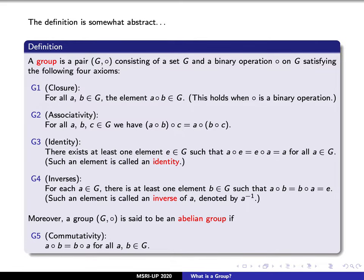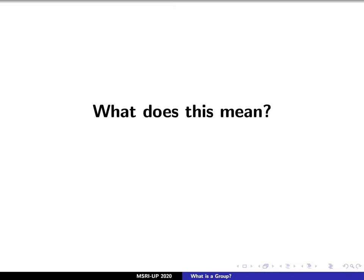We say that a group is a pair consisting of a set G and a binary operation, which we'll denote here by a small circle, that satisfies four axioms. But wait, before we get into all of that, what does this mean exactly? What is this idea of a set, and what is this idea of a binary operation? Well, first, a set we'll call a collection of elements. For now, we won't really get into detail of what that means, but there are many examples of sets that you probably have seen before.